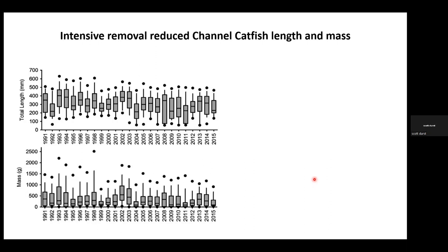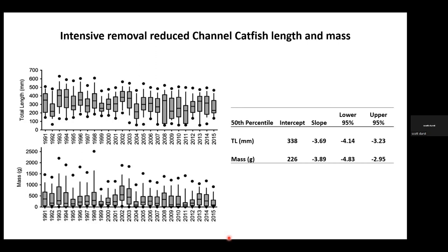Observed removal rates resulted in reduced channel catfish length and mass over about a 25-year period from 1991 to 2015. Box plots show total length in the top panel and mass of individual catfish in the bottom panel through time. There were significant declines at the 50th, 75th, and 95th percentiles over this period, resulting in median total length declining from about 340 mm at the beginning of monitoring to about 246 mm in 2015, with a corresponding reduction in median mass from about 225 grams in the early 1990s to about 130 grams in 2015.